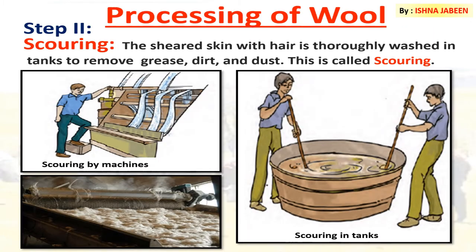The second step in processing of wool is scouring. The sheared skin with hair is thoroughly washed in tanks to remove grease, dust, and dirt — this is called scouring. Nowadays scouring is done by machines, as you can see in the picture. Earlier, scouring was done in tanks.